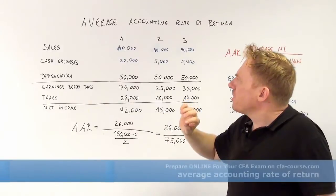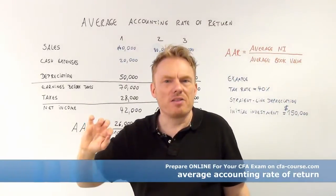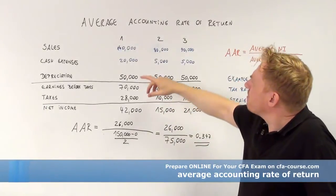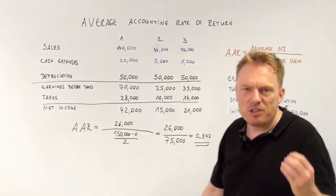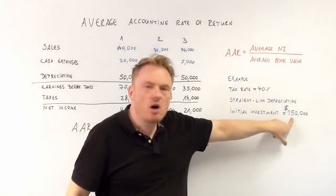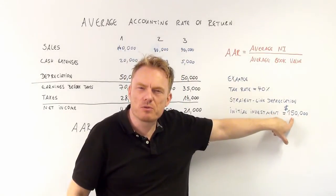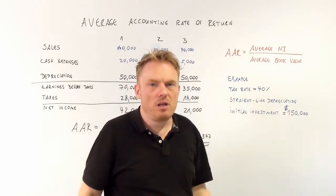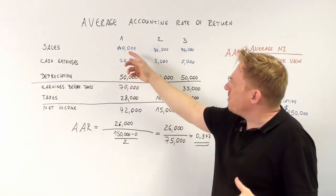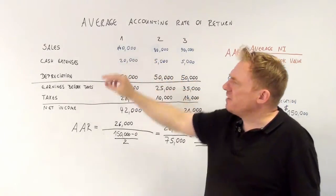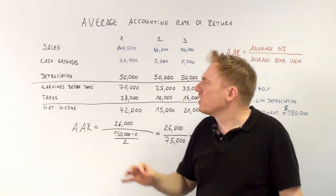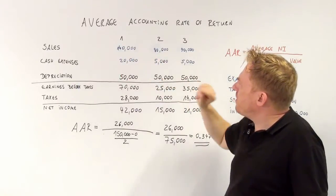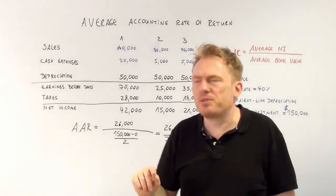We have an example. Blue numbers are the example numbers given to us. Say we have an initial investment of $150,000 — we buy a machine and pay $150,000 — and there are three years. Sales caused by this machine equal $140,000 in the first year, $80,000 in the second, and $90,000 in the third year.